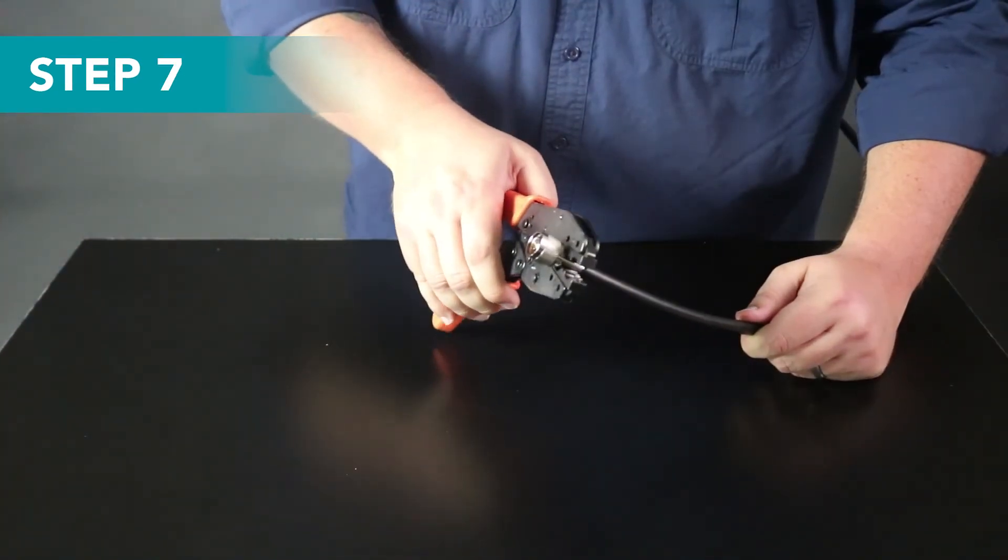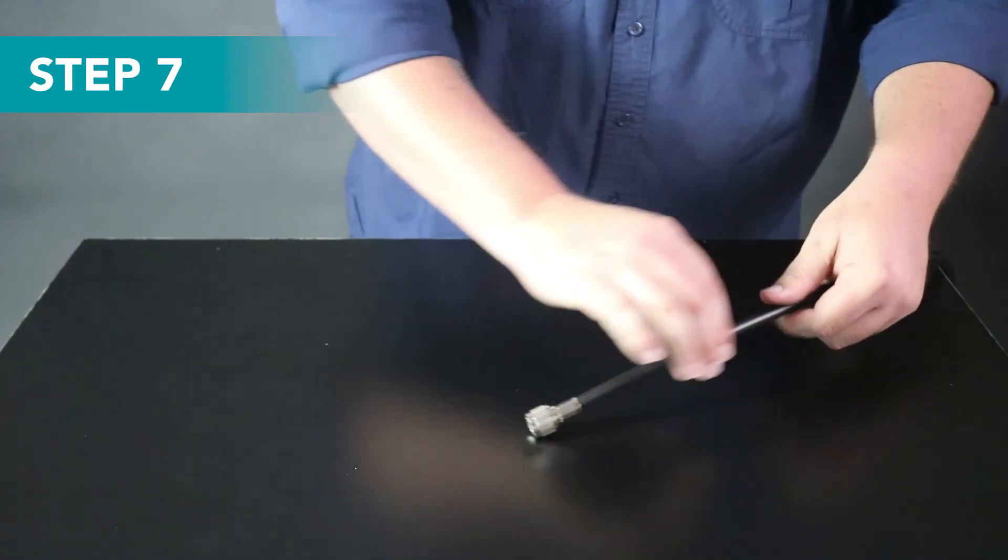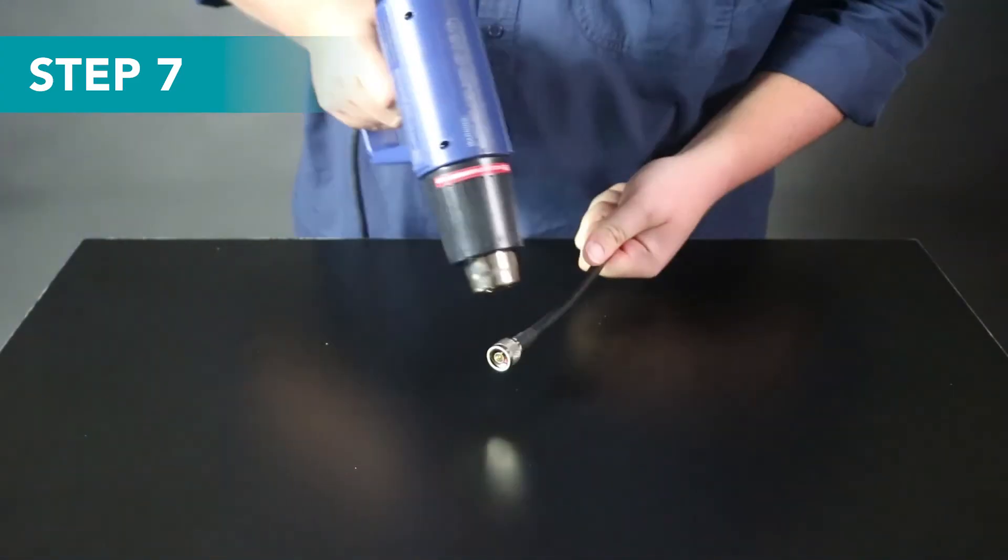Step seven, finally, crimp the end of the connector like so, and as an extra precaution to make your cable weather resistant, use the heat gun to seal the plastic shielding.